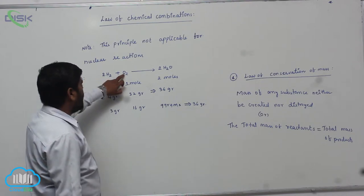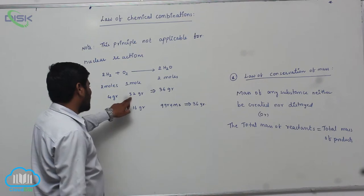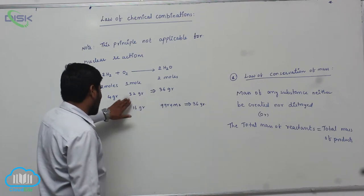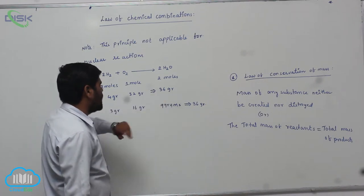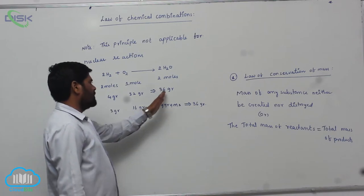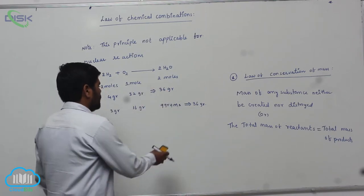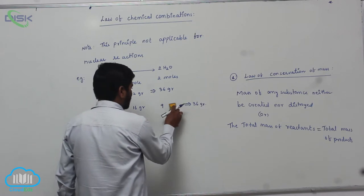So therefore, oxygen 32 grams. So 4 plus 32. This is the reactants. Then forms same mass. That is which one? 36 grams. Which grams? 36 grams.